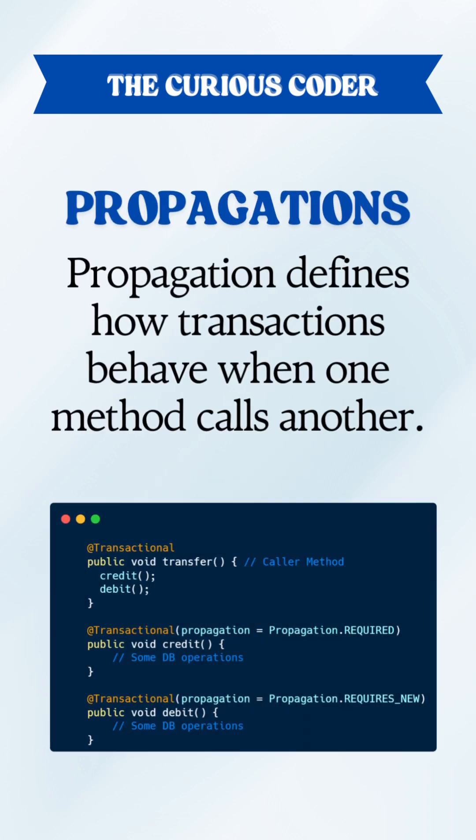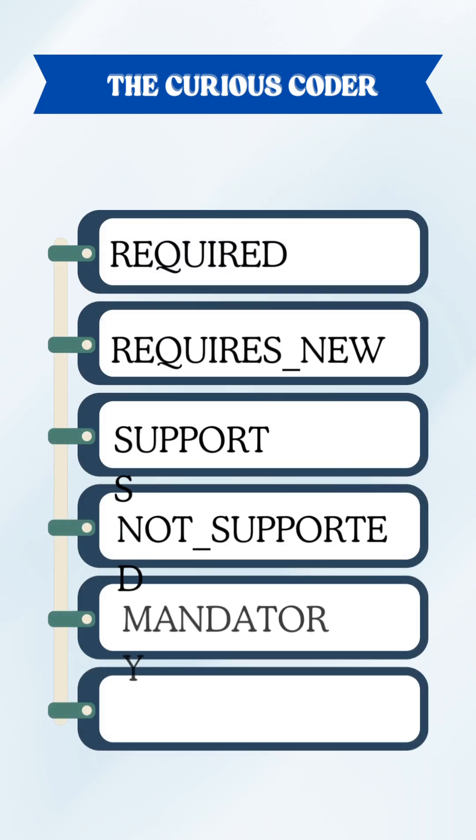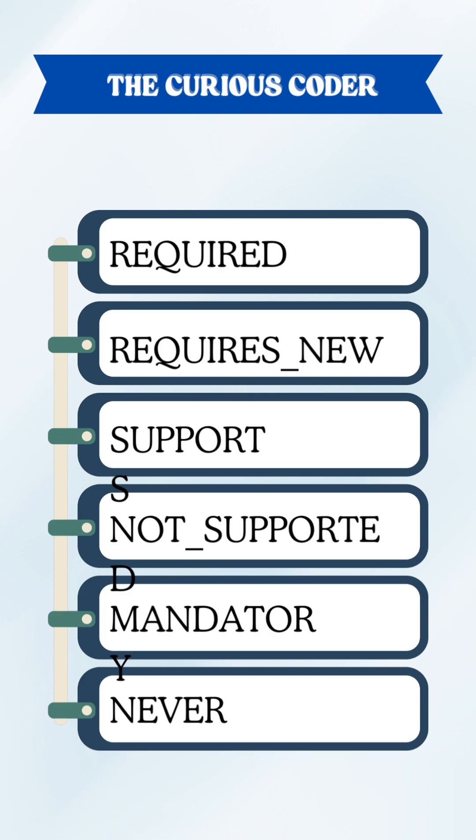Propagation defines how a transaction behaves when one method calls another. Should it join the existing transaction or should it create a new one? We have multiple propagations and let's understand them one by one.